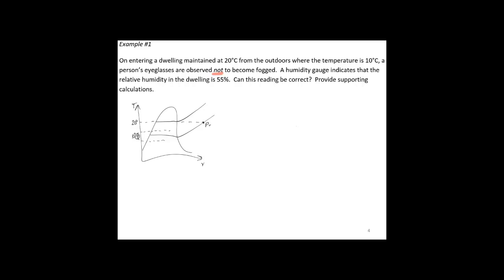If 10°C comes across above the partial pressure line, we come down and don't fog up. But if 10°C is below — meaning we hit the vapor dome and then come down to where 20°C is — we have to release some moisture in the form of condensation. So we need to figure out if 10°C is above or below, and we can use that 55% relative humidity along with the saturated pressure to get the information we need.